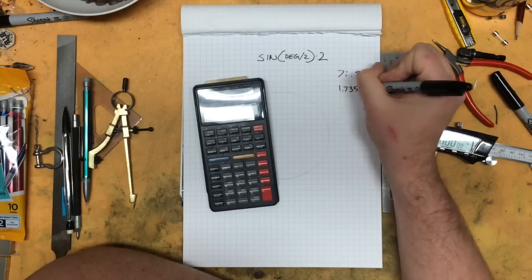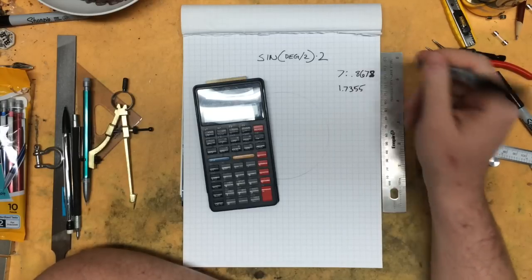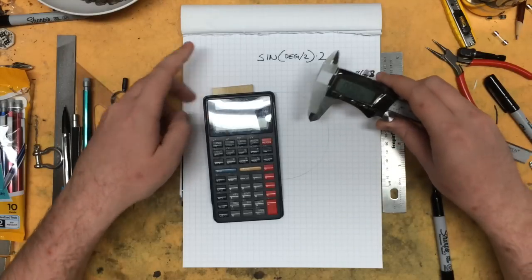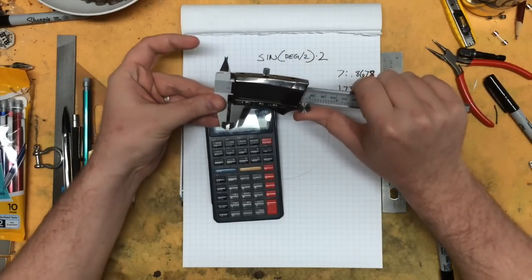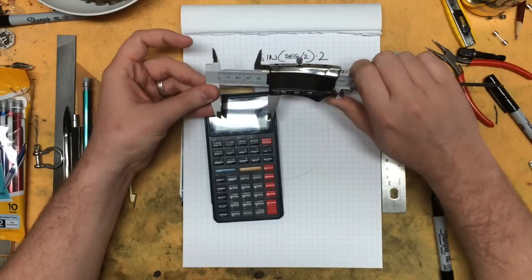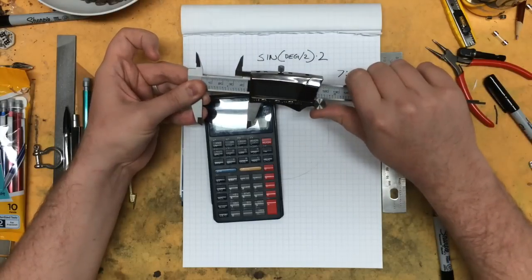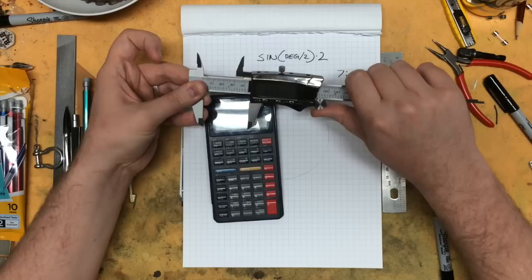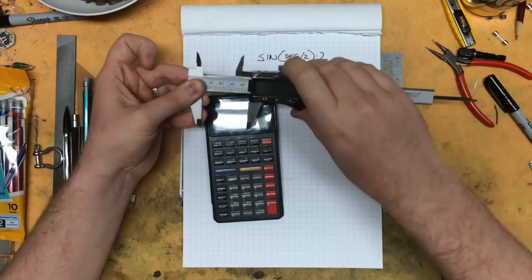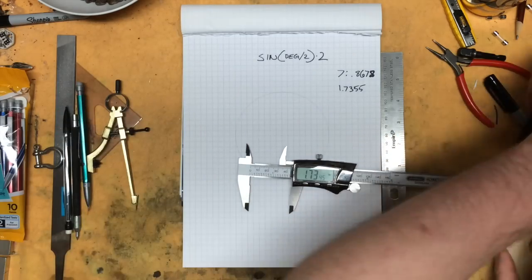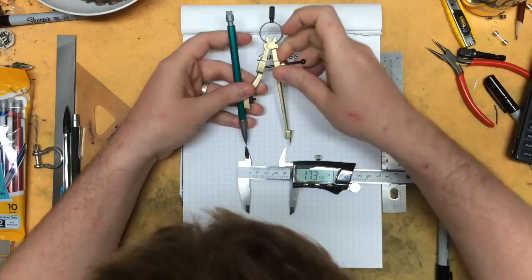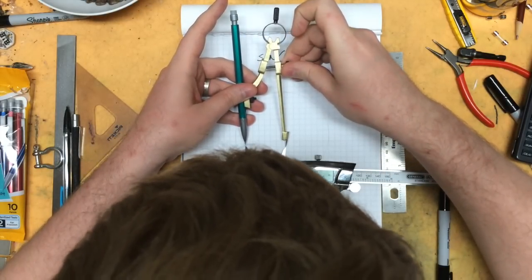That's going to give us a value of 1.7355, etc. This is what we need to set our calipers to. Well, really this is what we need to set our compass to. We're gonna use our calipers to set our compass just because it's the most accurate way to do it, at least the most accurate way I have. Generally in geometry you only go to the second decimal place and that's close enough.